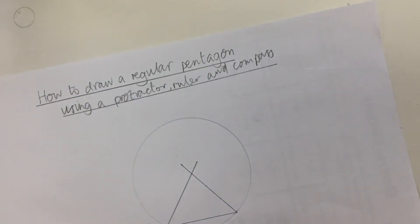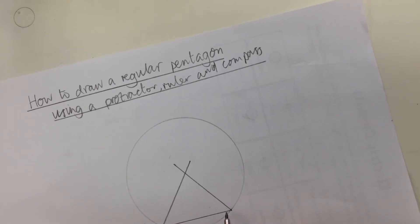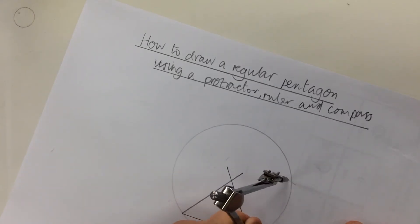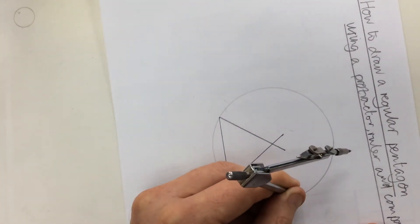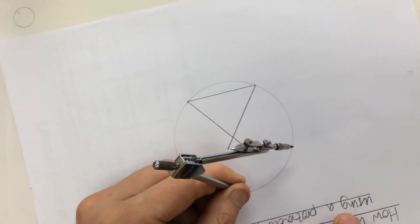Now once I've done that I want to mark on 5 equal lengths. So these are going to be 5cm. And again, very carefully set the compass and use it to mark on those points.